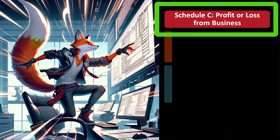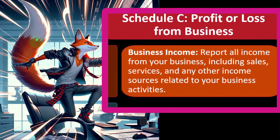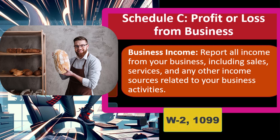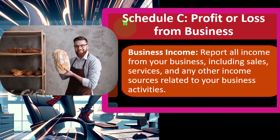Schedule C: profit or loss from the business. Report all income from your business including sales, services, and any other income sources related to your business activities. When talking about a business, it's more complex to determine what income is there. For W-2 or 1099 income, the IRS forces the payer to report the income earned. For a Schedule C, you might get 1099s but they might not add up to the full amount of business income.